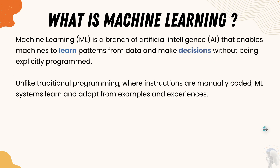Machine learning is a branch of artificial intelligence that enables machines to learn patterns from data and make decisions without being explicitly programmed. Unlike traditional programming, where instructions are manually coded, in a machine learning system, machines learn and adapt from examples, experiences, and the large datasets we provide. That is machine learning in a nutshell.